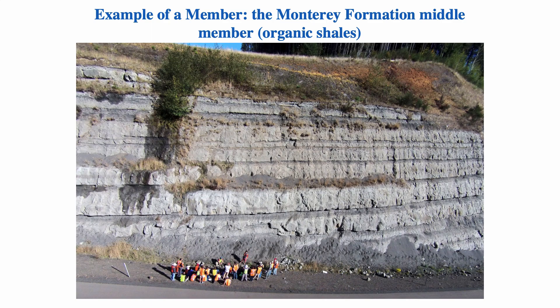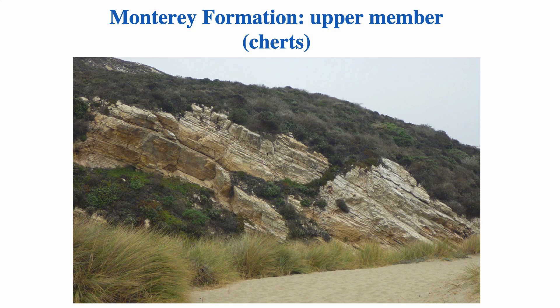In California, the Monterey formation is divided into two main members. The middle member is an organic shale — you can recognize multiple beds within it, and it has a certain facies and characteristic that makes it easy to spot at the outcrop. By contrast, the upper member of the Monterey formation is composed of silicates — porcelainite and chert — very different from the lower member. The two members together can essentially be mapped as one formation.